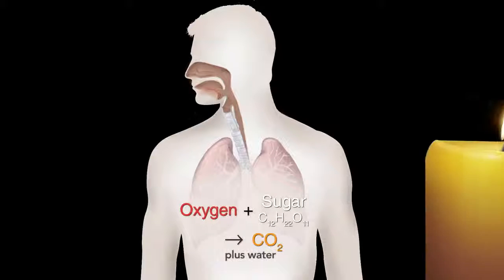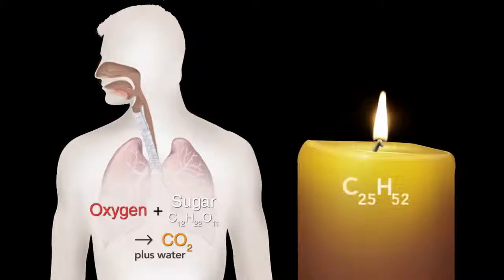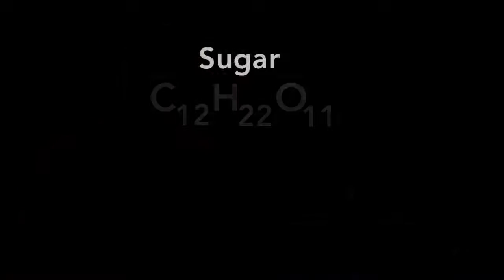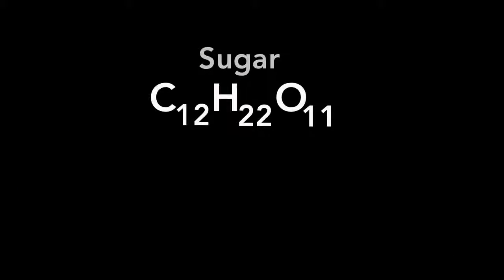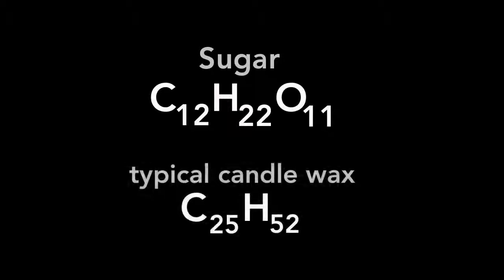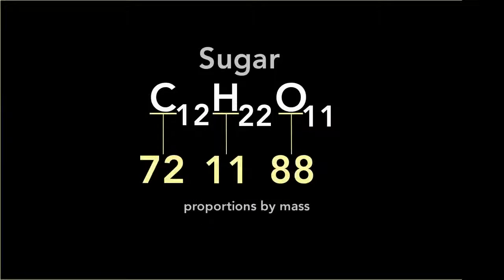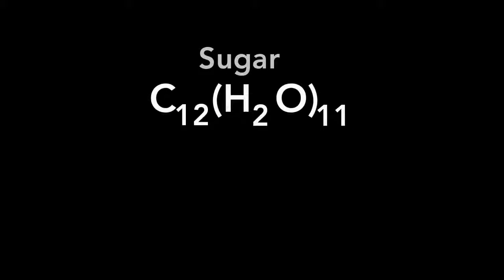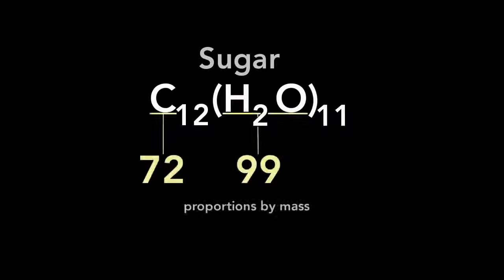The candle combines with parts of the air, forming carbon dioxide, and evolves heat. We may thus look upon the food as fuel. Let us consider sugar, which will serve my purpose — it is a compound of carbon, hydrogen, and oxygen, similar to a candle as containing the same elements, although not in the same proportions, as shown in this table. For the oxygen and hydrogen are in exactly the proportions which form water, so that sugar may be said to be compounded of 72 parts of carbon and 99 parts of water.